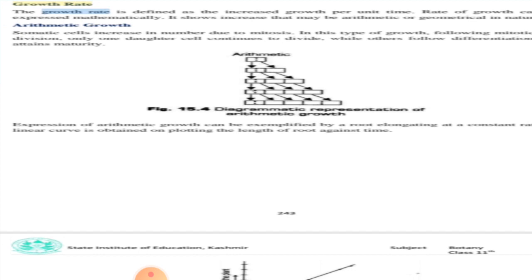Mathematical arithmetic growth is expressed as Lt = L0 + rt, where Lt is the length after time, L0 is length at the beginning, and r is the growth rate.